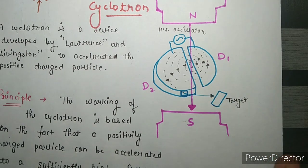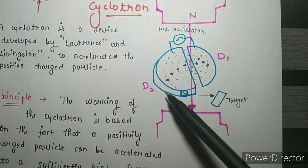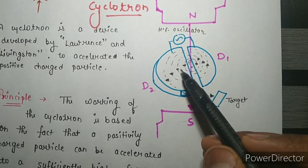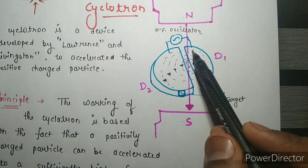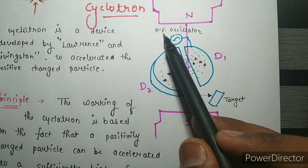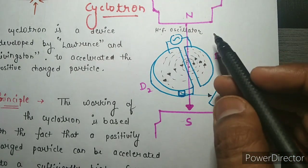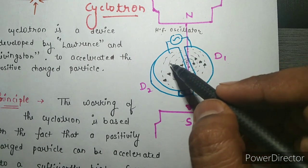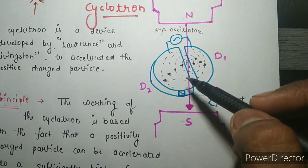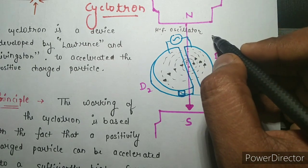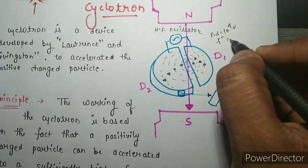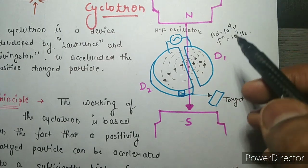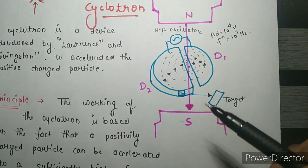This is the basic circuit diagram of the cyclotron. The D-shaped structures, called 'dees', are made of metal and are hollow inside. There is a point P at which the charge particle is placed. These dees are connected with a high-frequency oscillator which provides a potential difference between the two dees of approximately 10 to the power 4 volts at a frequency of 10 to the power 7 hertz.